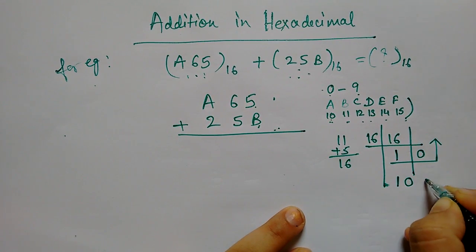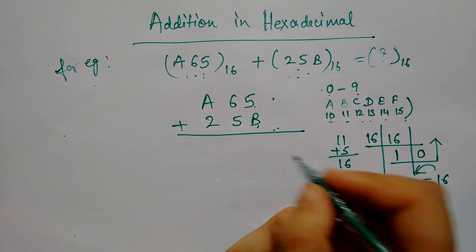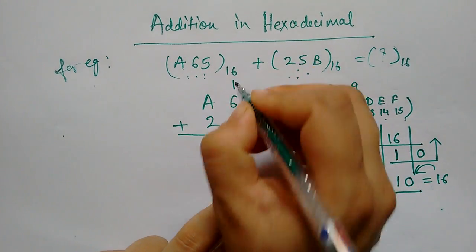So, how can we write 16 in hexadecimal? Like this. 1, 0. Here, carry 1.